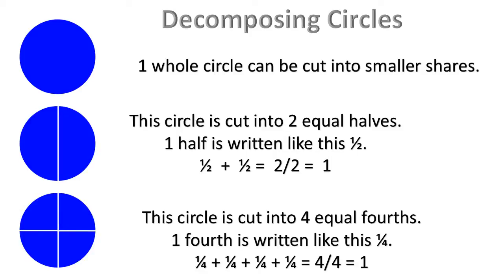This circle is cut into four equal fourths. 1 fourth is written like this. 1 forward slash 4. 1 fourth plus 1 fourth plus 1 fourth plus 1 fourth equals 4 fourths. 1 whole.